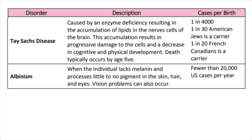Albinism: when the individual lacks melanin and has little to no pigment in the skin, hair, and eyes; vision problems can occur. Cases per birth: fewer than 20,000 U.S. cases per year. Autosomal dominant disorders are heterozygous — in order to have the disorder, the individual only needs to inherit the gene change from one parent.